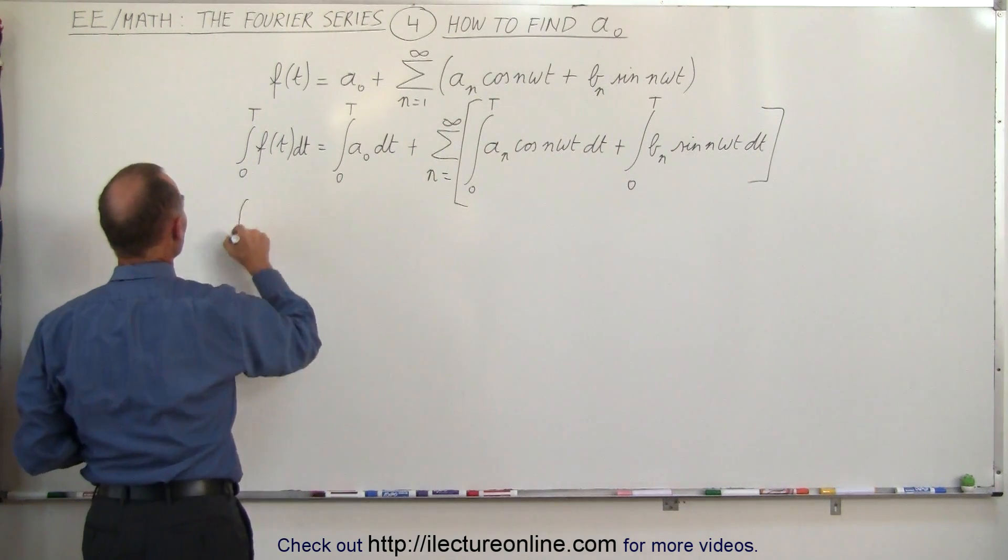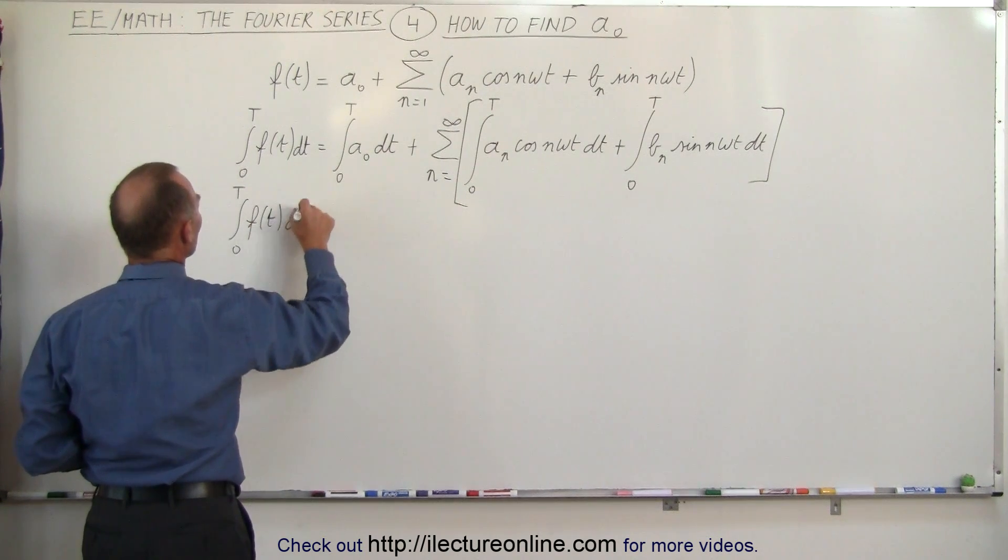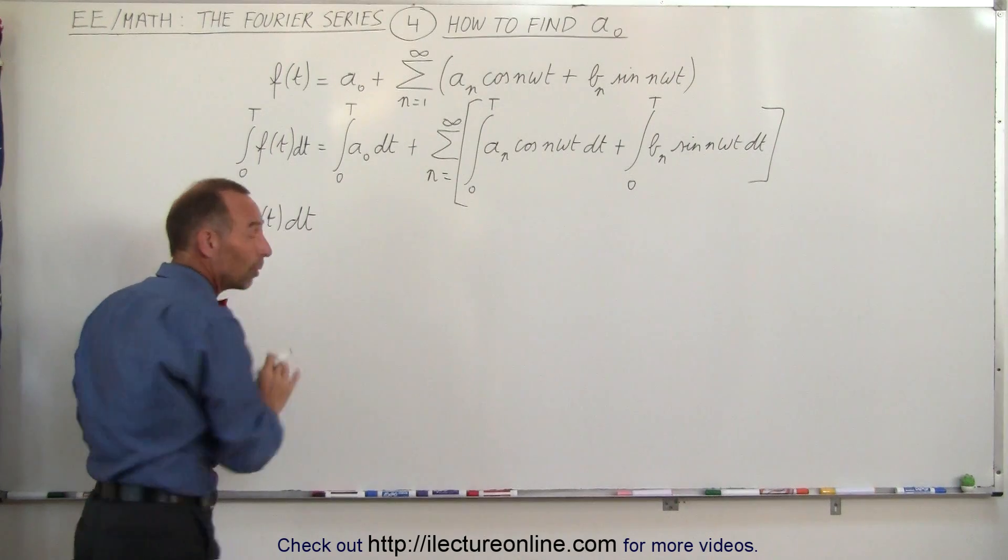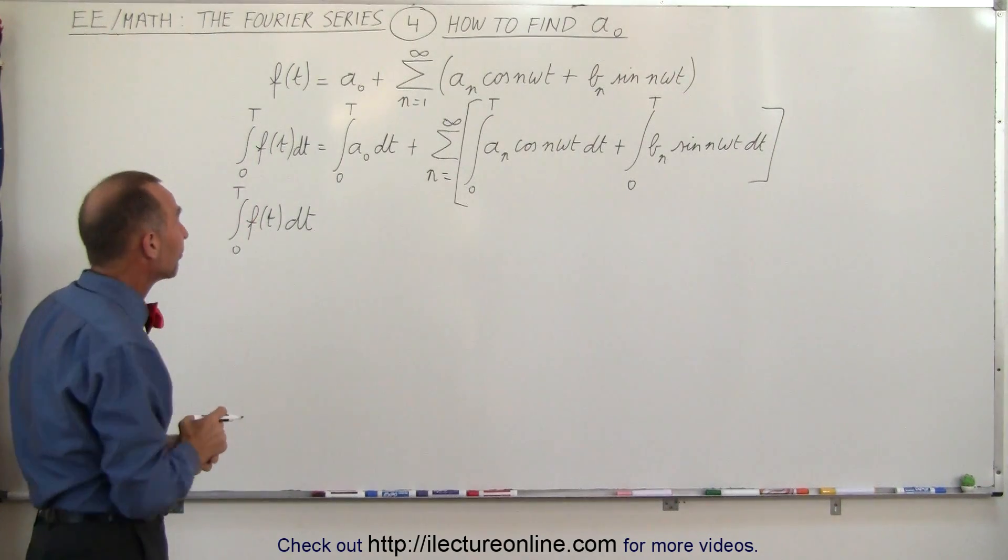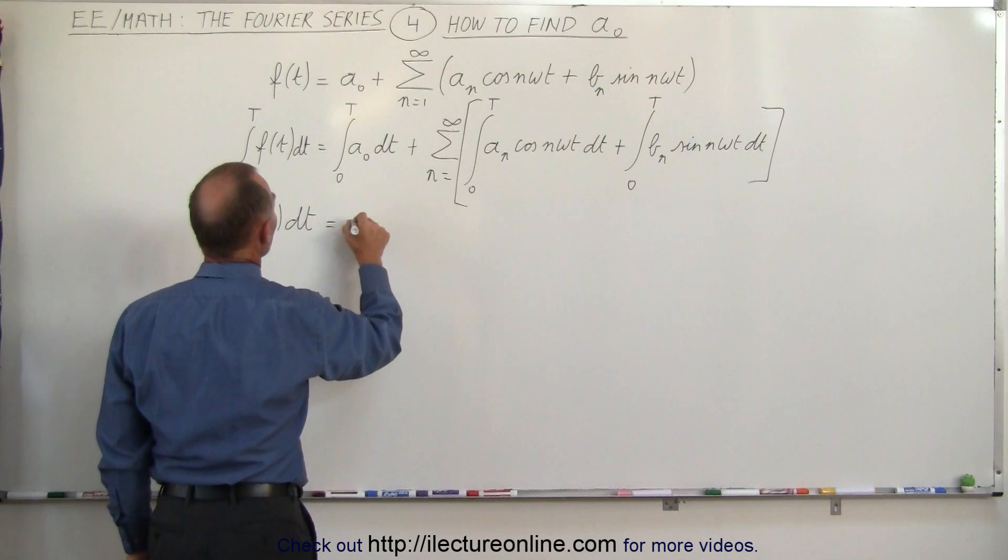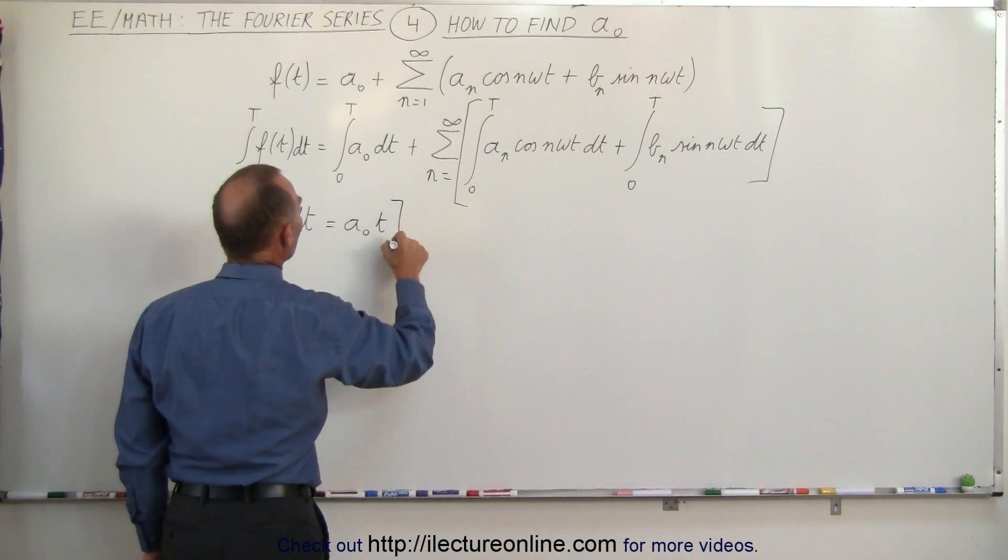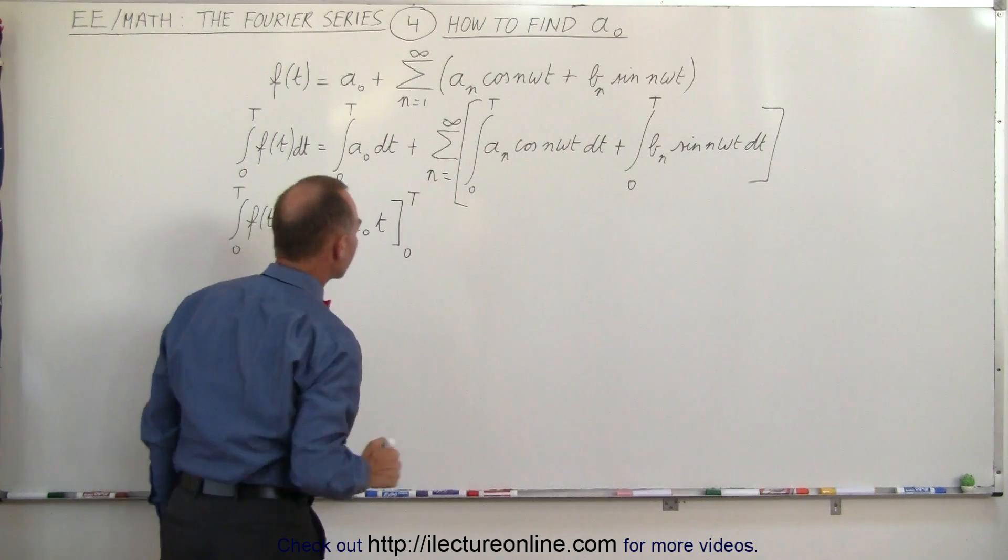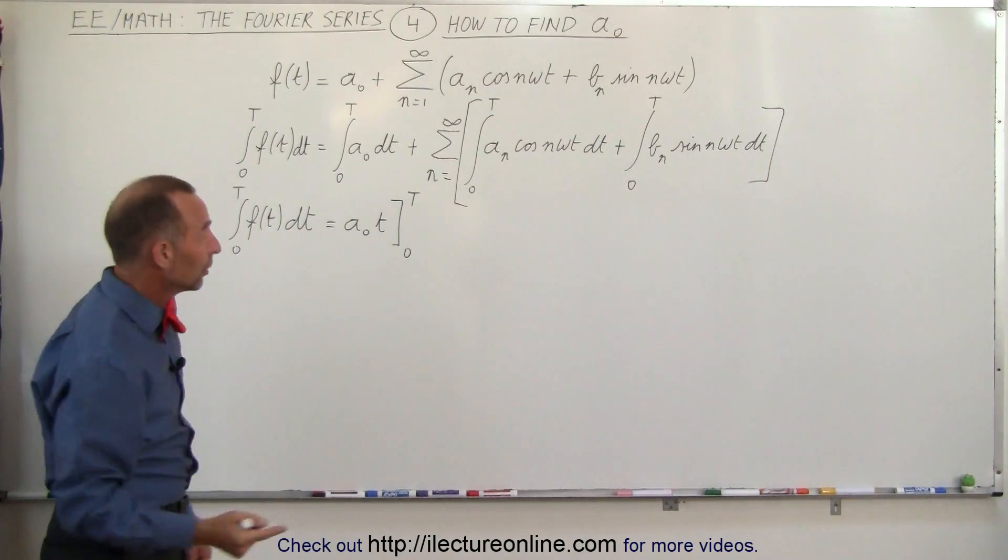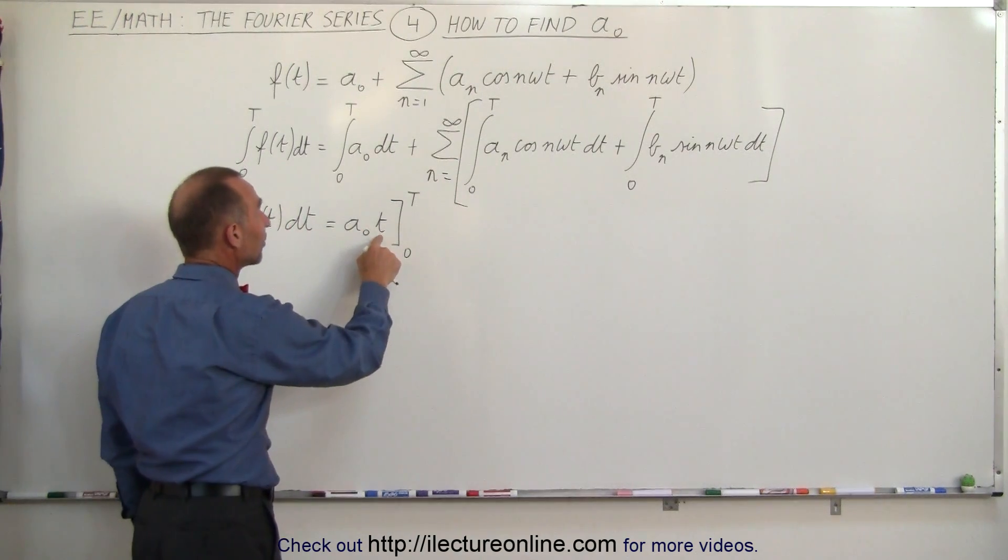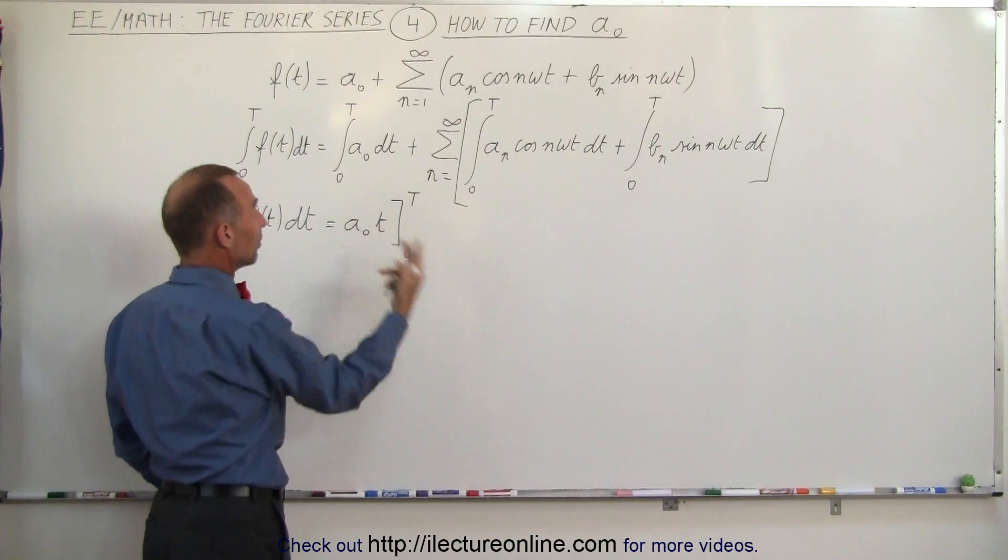That means that the integral from 0 to T of f of t dt, and of course we can't integrate that yet because at this point f of t can be any periodic function, is equal to a sub-naught times the integral of dt, which is t evaluated from 0 to T. If we plug in the upper limit, we get a sub-naught times the period, plug in the lower limit, we get 0.